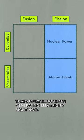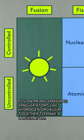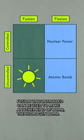Fusion means smashing smaller atoms, like hydrogen or helium, together to make a larger atom. A little mass gets lost, and even more energy is released. Fusion uncontrolled can be used to make another kind of bomb — the hydrogen bomb. These have been tested by multiple countries but never actually used in war.